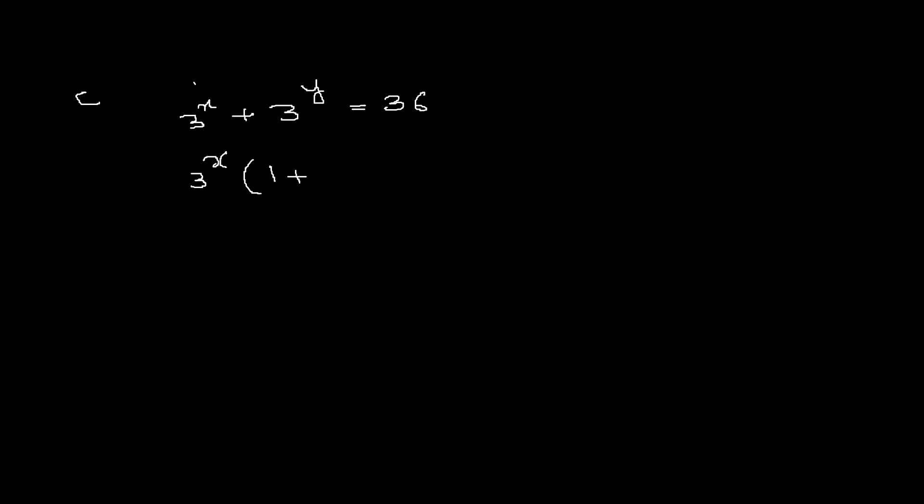And you know 36 can be written as 3 raised to power 2 times 4. So from here we have this equation and this is the product of numbers, which is 3 raised to power x equals to 3 square must be, and 1 plus 3 raised to power y minus x must be equals to 4. So by taking them equals we get 3 raised to power x equals to 3 square, and the other thing is 1 plus 3 raised to power y minus x equals to 4.